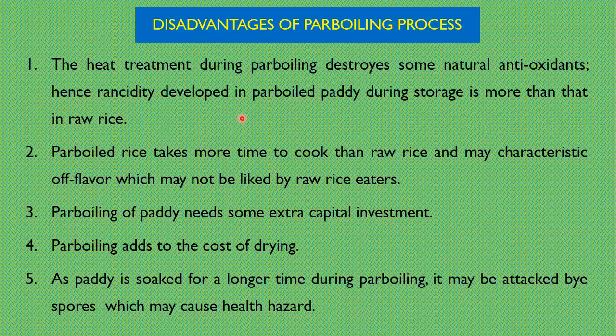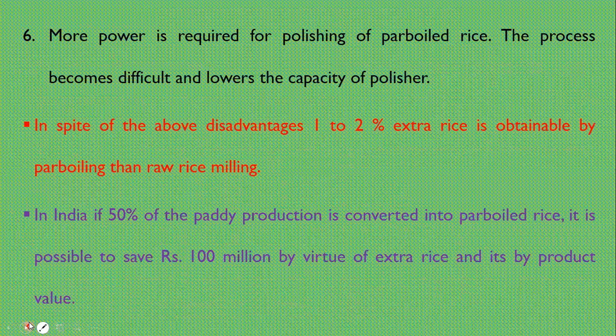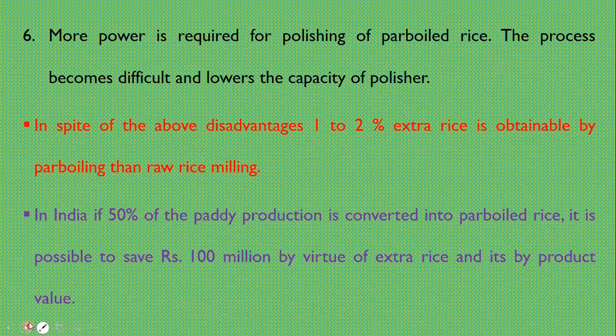Parboiling requires some extra capital investment and adds to the cost of processing. Since paddy is soaked for a longer time during parboiling, it may be attacked by fungi, which may cause trade hazards. More power is required for polishing of parboiled rice because, due to the gelatinization process, the rice structure becomes more compact and hard, requiring more pressure in the rubber roller. This makes the process difficult and lowers the capacity of polishing.